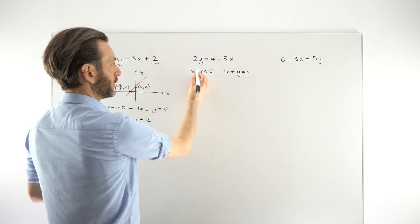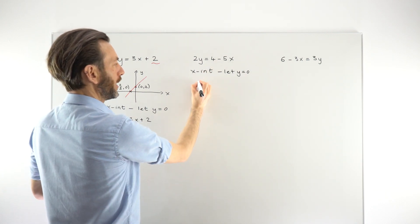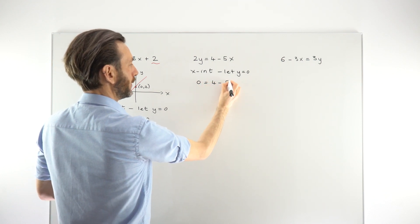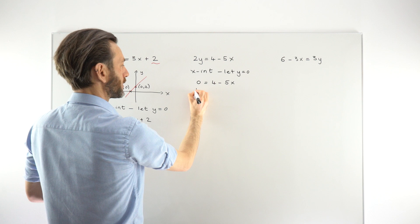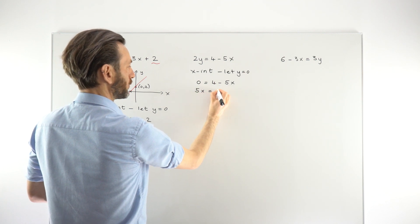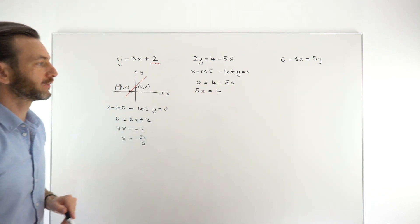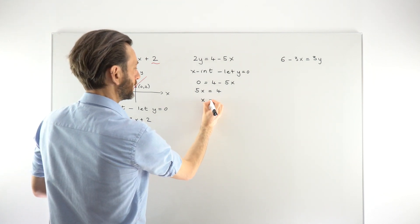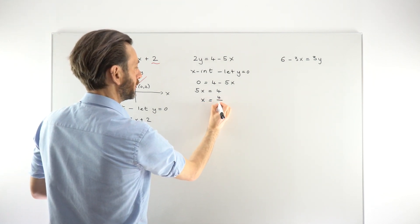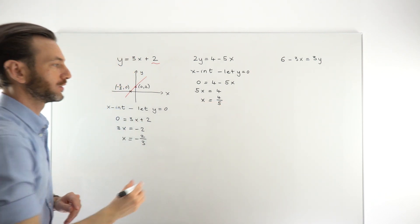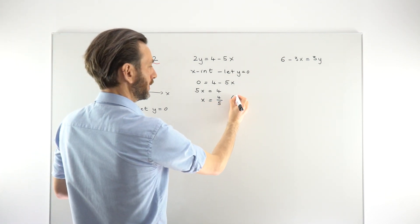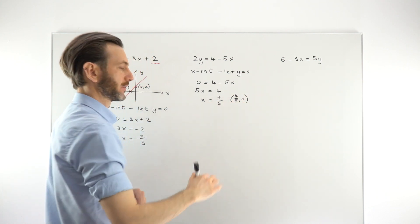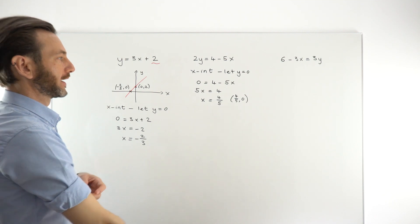For the second example, letting y be 0: substituting 0 in for y, 2 times 0 is 0, so we get 0 equals 4 minus 5x. Rearranging this linear equation, we get 5x equals 4, then dividing both sides by 5 gives us 4 over 5. So the full x-intercept coordinate is (4/5, 0) — a point on the horizontal x-axis.